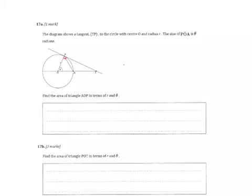Okay, now with that being said, let me erase that. The circle has a center of O and a radius of R. The size of angle POA is theta radians. Find the area of triangle AOP in terms of R and theta.